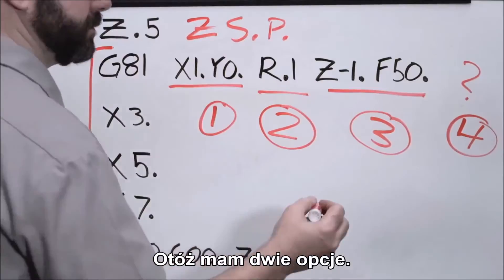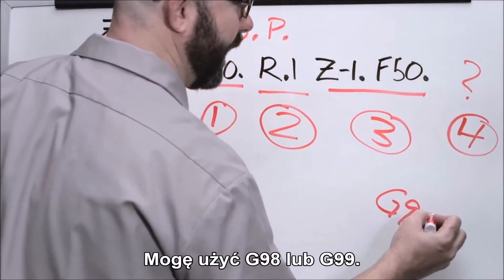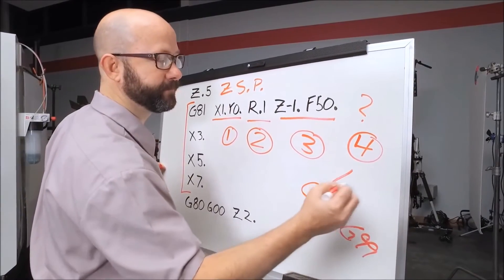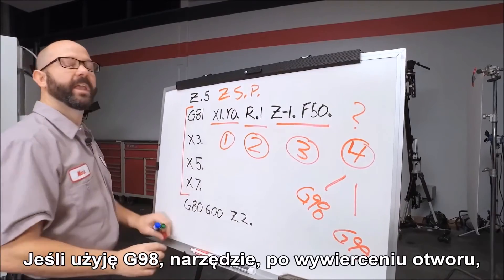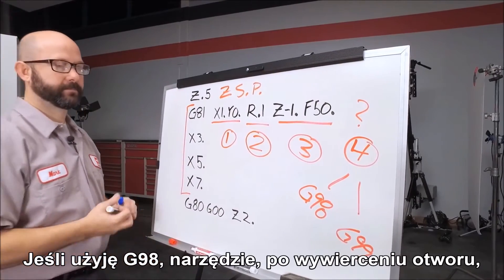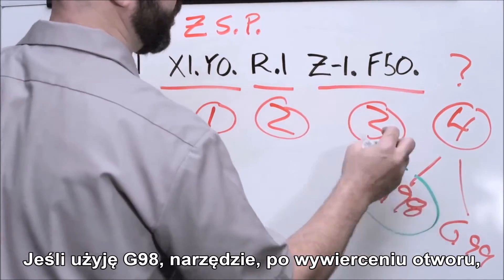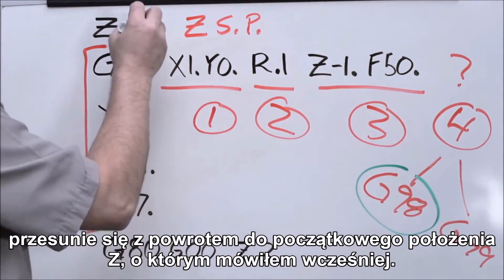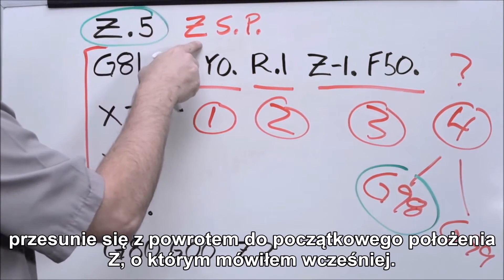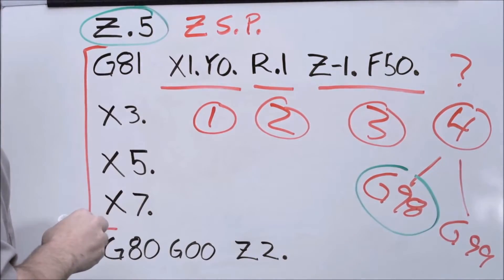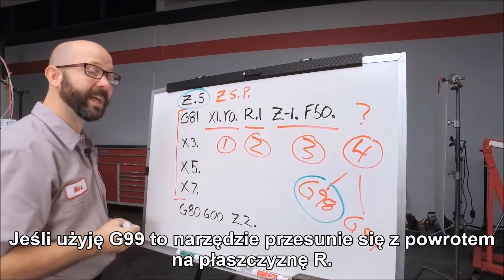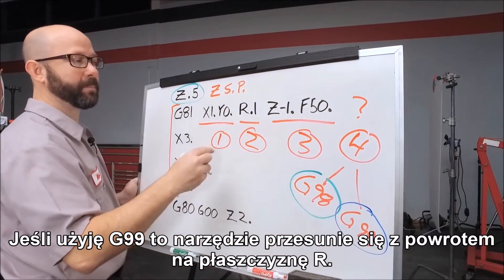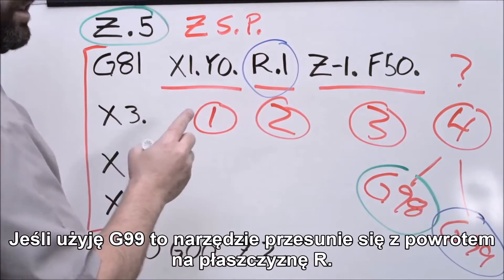We have two options: we can either use a G98 or a G99. If we use a G98, the tool, after it's done drilling the hole, is going to rapid back up to that Z starting position we talked about earlier. If we use a G99, that tool is going to rapid back to our R plane.